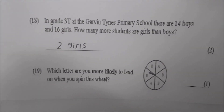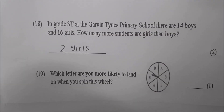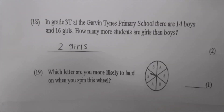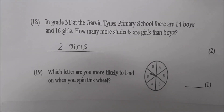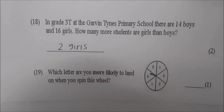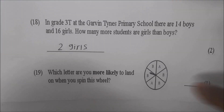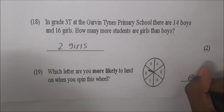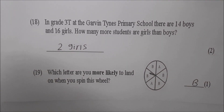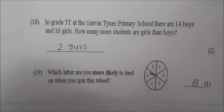Look at number nineteen. Which letter are you more likely to land on when you spin this wheel? Let's look at the letters on the wheel: B, A, B, B, A, and B. Which letter are you more likely to land on? B. Put that on the line there — capital B. Very good. Why would you more likely land on B? Because there's more B's than A. Very good, Sky.